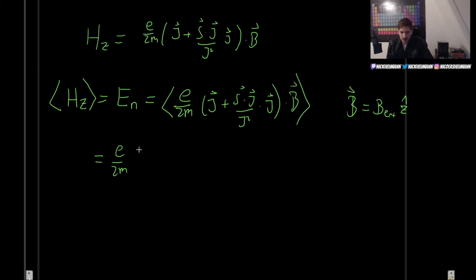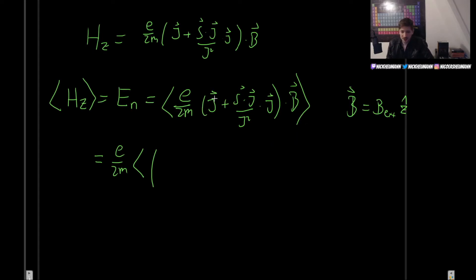Now let's factor out J to the right. We get 1 plus S dot J over J squared, and all of this multiplied by J dot B. We can take these in the same direction.